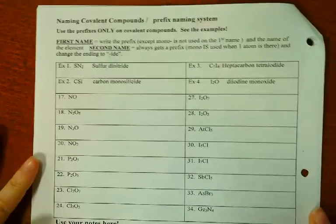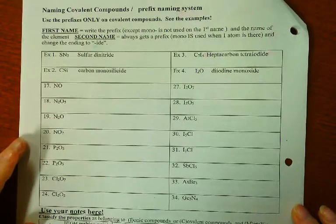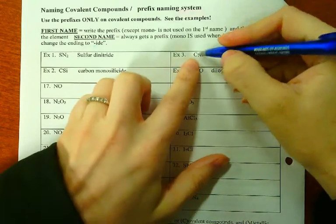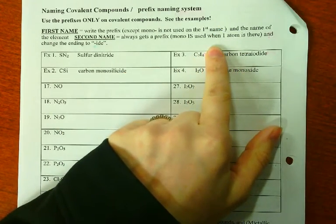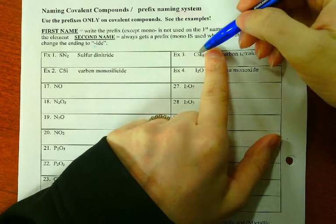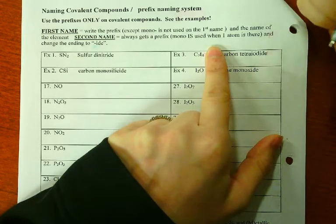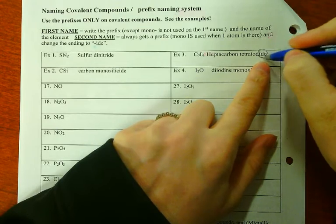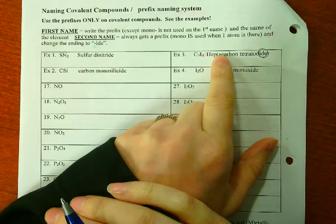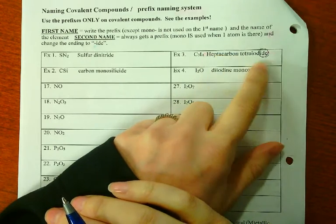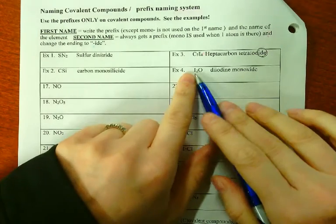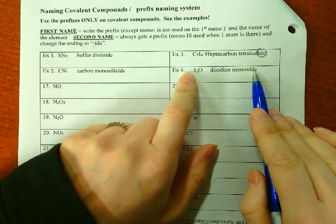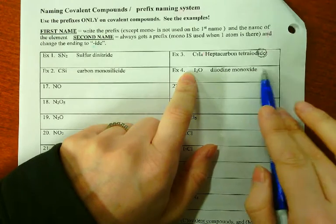Now we're flipping to page 4. We're doing the opposite, we're naming from formulas. If you look at example 3, they had C7I4. The 7 after becomes the letters in front, which is hepta. So heptacarbon tetraiodide. Be very careful. Only the last three letters change to -ide. The first atom, carbon, we don't call carbide. We say carbon iodide.